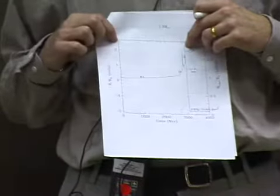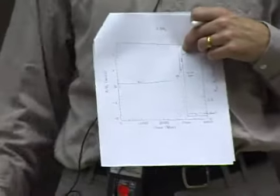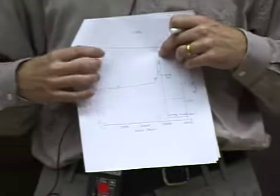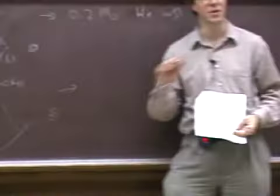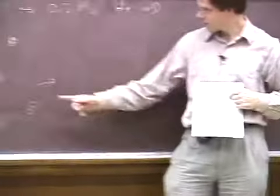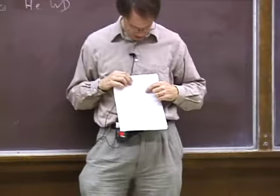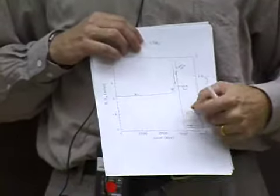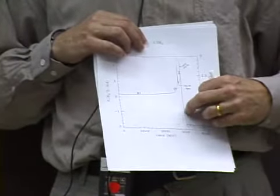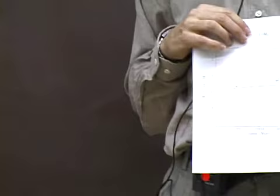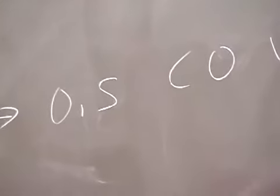Then it exhausts helium in the center and begins to swell up again. On the AGB it gets up to a size of 400 solar radii, so before that it starts to transfer mass to the companion. The final state is not the usual 0.58 solar mass, but a bit before that — say a 0.5 solar mass — and since it has finished burning helium, the center has been converted to carbon-oxygen, giving a 0.5 solar mass carbon-oxygen white dwarf.